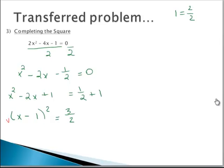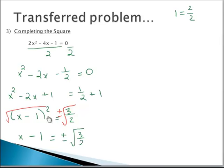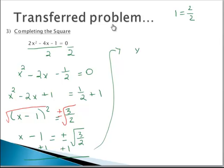Now we take the square root of both sides — and don't forget plus or minus. You get x minus 1 is equal to plus or minus the square root of 3 halves. So we need to add 1 to both sides, giving us x equals 1 plus or minus the square root of 3 halves.